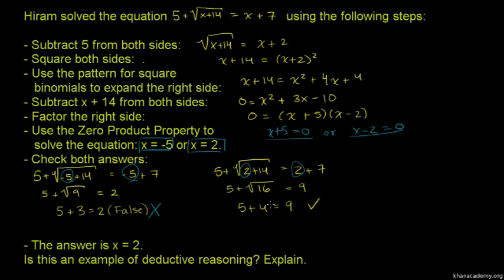Checking x = 2: 5 + √(2+14) = 5 + √16 = 5 + 4 = 9, and 2 + 7 = 9. This checks out correctly.